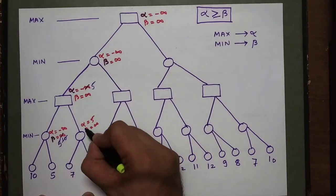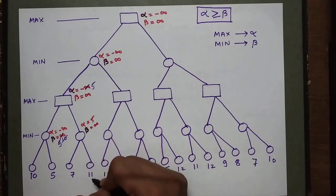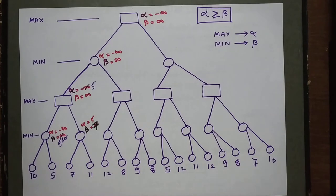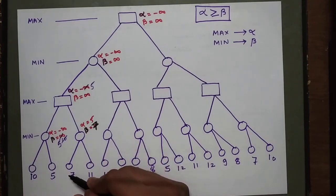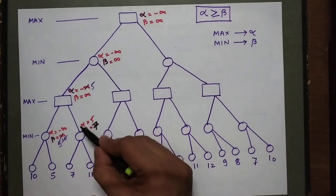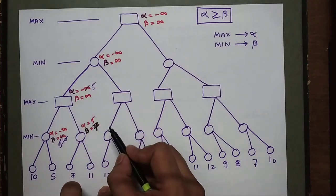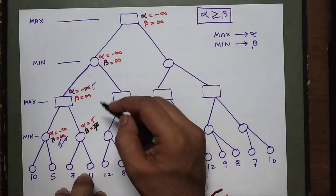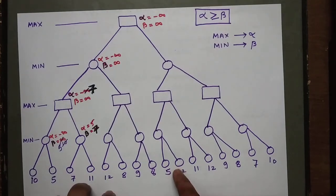Now at the next min node, since it is a min node only beta will change. What is the minimum of 7 and 11? It is 7. So the beta value reflected here is 7. This change must be reflected to its parent. The parent is a max node so alpha can change. What is the maximum of 5 and 7? It is 7. So the alpha value here changes from 5 to 7.